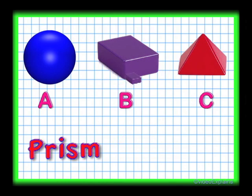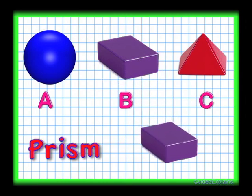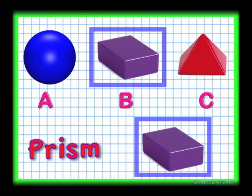The right answer is B. The purple shaped object is a prism. P-R-I-S-M spells prism.